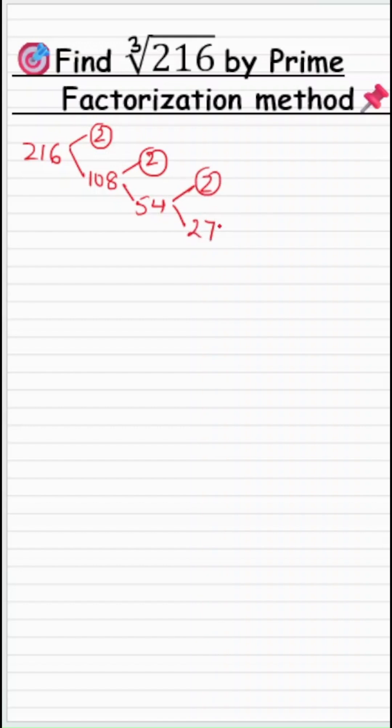2 is prime, 27 is not. 27 can be written as 3 times 9. 3 is prime. 9 is not, and finally 9 is 3 times 3, and 3 is a prime number.